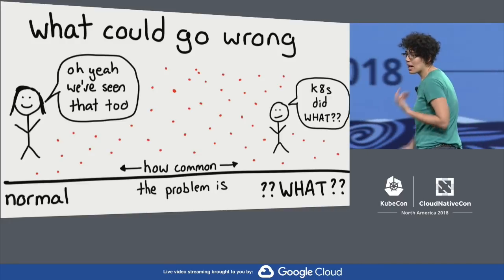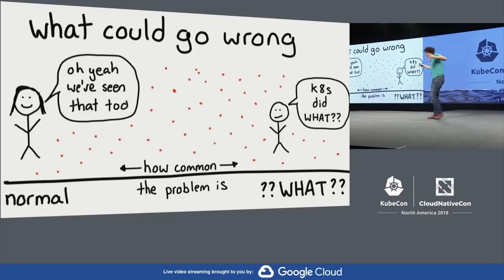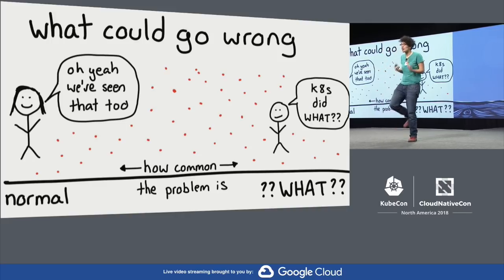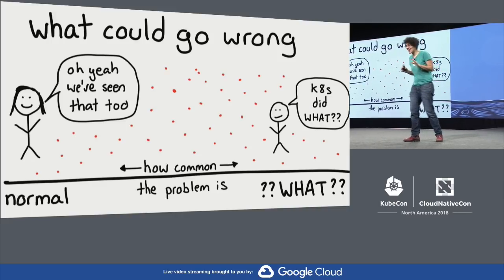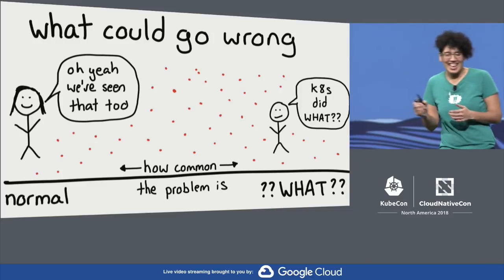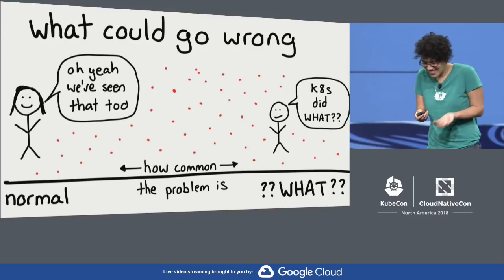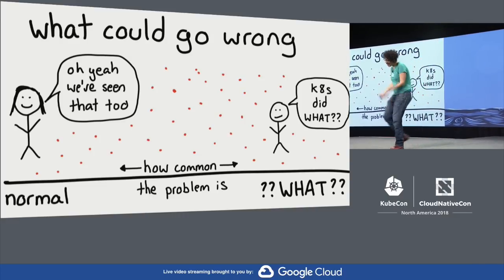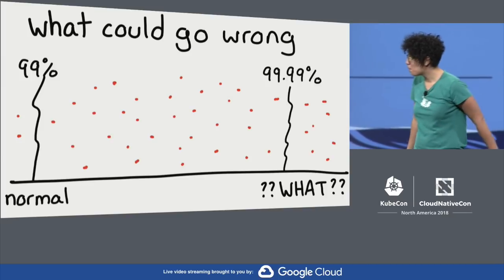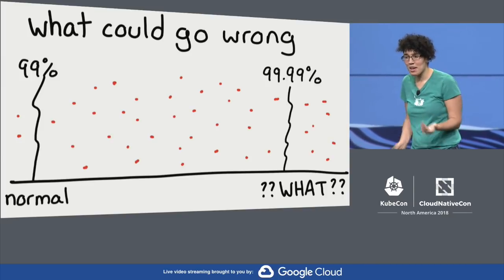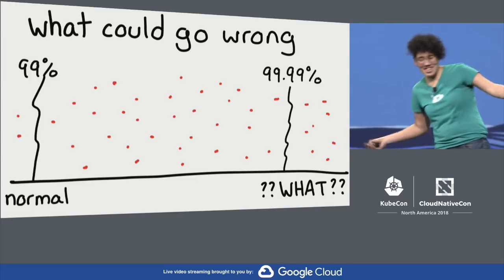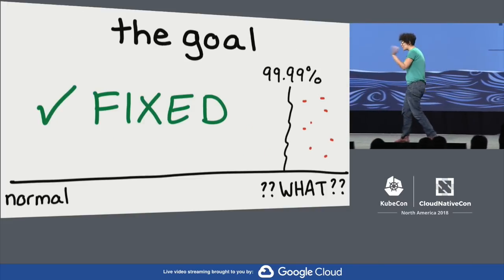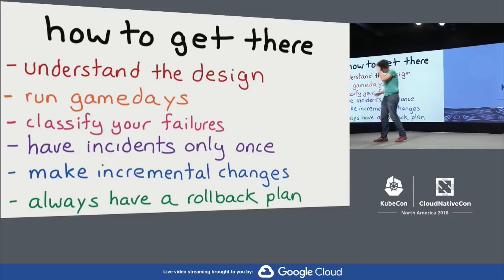The way I think about this process: we have what could go wrong in your infrastructure — these red dots are things that could possibly go wrong. On the left are normal problems where anyone at KubeCon will say 'yeah, we saw that.' On the right are problems like 'DNS did what?' — much more uncommon but still real. If you want to run a high availability service, you need to deal with the 'what happened' end of the spectrum. So the goal is to fix all these problems. Here's how: understand the design, run game days, classify your failures, have incidents only one time, and make incremental changes.